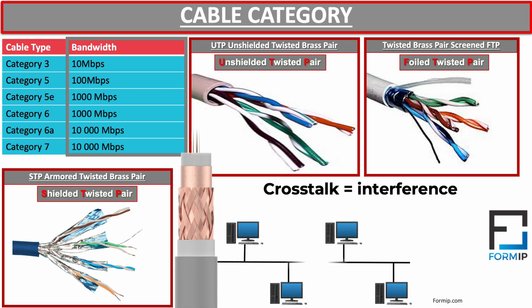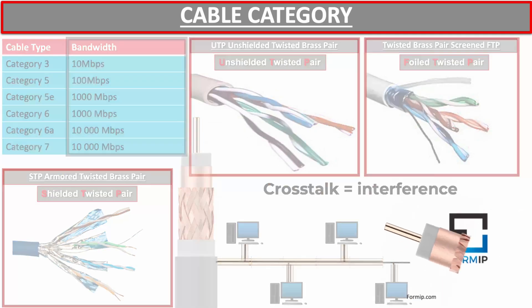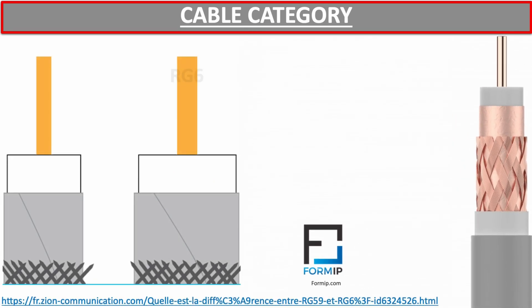Now let's move on to coaxial cable, which is mainly used by operators to provide high-speed internet to computers. In the early days of computing, it was used more like a bus to serve a network of computers. There are two common types: the RG6, designed for long distances and commonly used for cable TV and internet connection, and the RG59, designed for short distances and used more for high-definition, high-quality video.